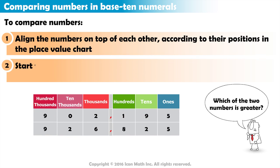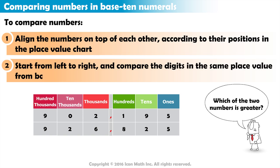Then, starting from left to right, we compare the digits in the same place value from both numbers, until we find two unequal digits.